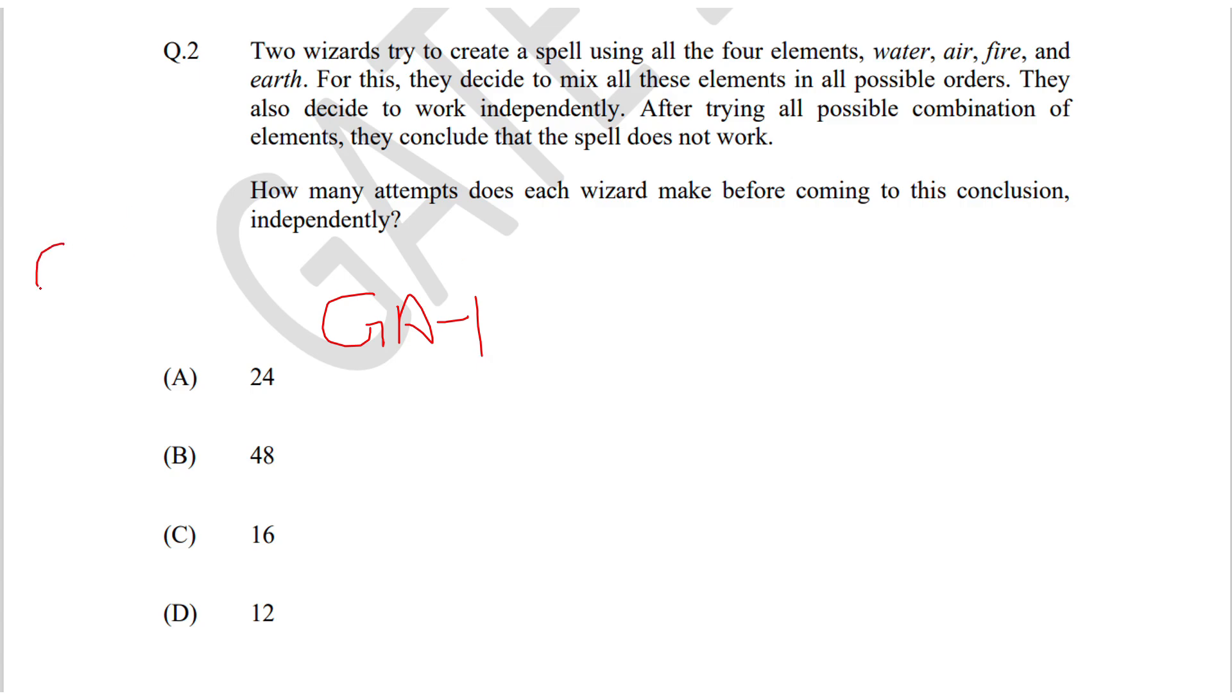The question says two wizards try to create a spell using all the four elements: water, fire, air, and earth. For this, they decide to mix all the elements in all possible orders. This is basically a question of permutation and combination.